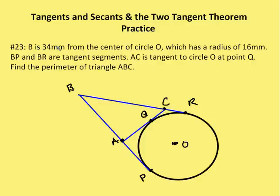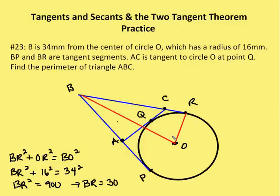Problem 23: We know B is 34 millimeters from the center of circle O. So if I draw a line from B to O, it's 34 centimeters from the center, which has a radius of 16 millimeters. BP and BR are tangent segments, so they're the same distance. AC is tangent to circle O at point Q, so right here. And we want to find the perimeter of triangle ABC, so this top triangle here.